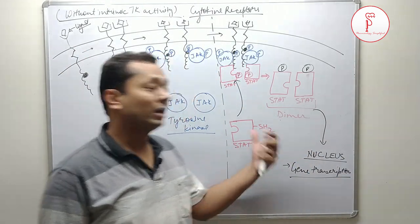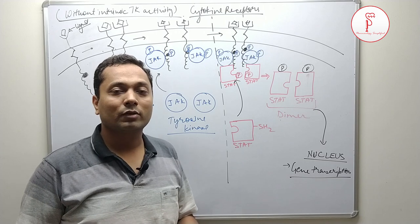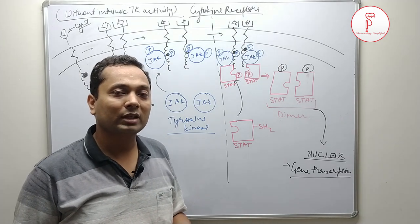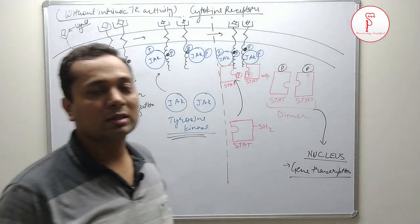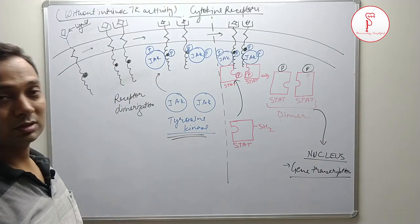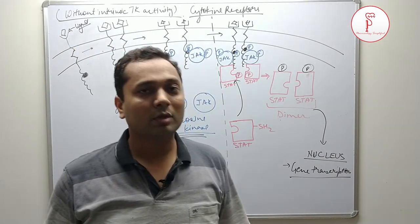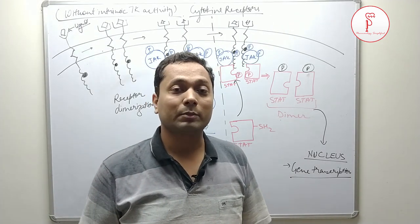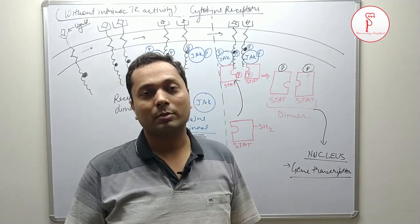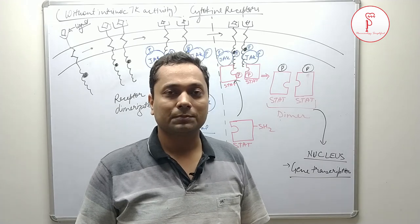We are now clear with the physiology of tyrosine kinase receptors. There are two classes: one with intrinsic tyrosine kinase activity, and the other — cytokine receptors — that do not have intrinsic activity and instead recruit proteins like JAK to phosphorylate tyrosine residues. I would like to end this module here. Please subscribe to the channel, share the video, and follow us on Facebook and Instagram — links are in the description below. Happy learning, thank you very much.